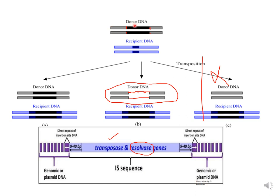Looking at the diagram, the donor DNA is represented in black and the recipient DNA in blue. The first mechanism, copy-paste or replicative, shows a copy of the transposon in both donor and recipient. The second mechanism, cut-paste or non-replicative, shows the transposon moved from donor to recipient with no copy retained in the donor. The third, conservative, shows no loss of any nucleotide.